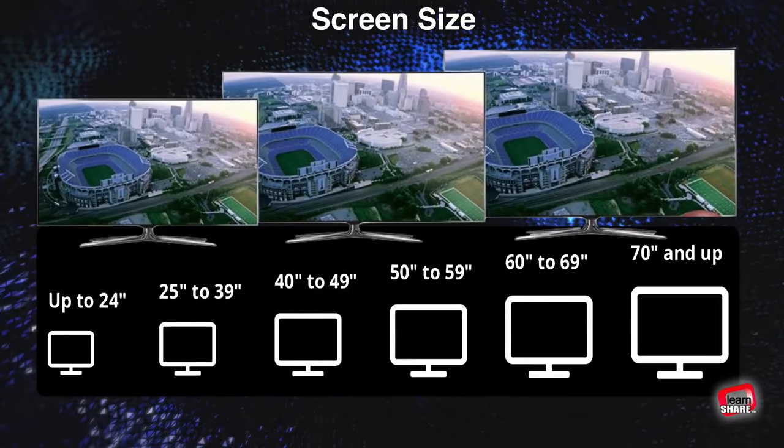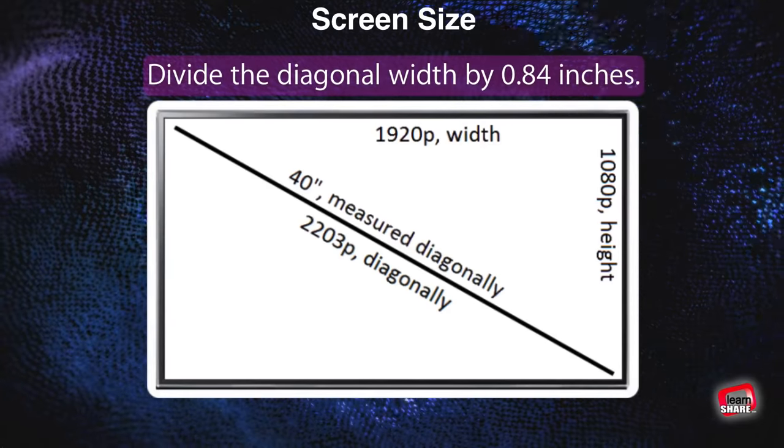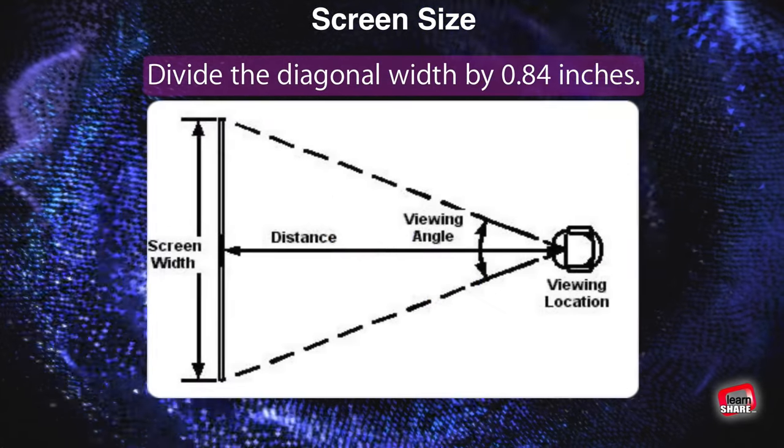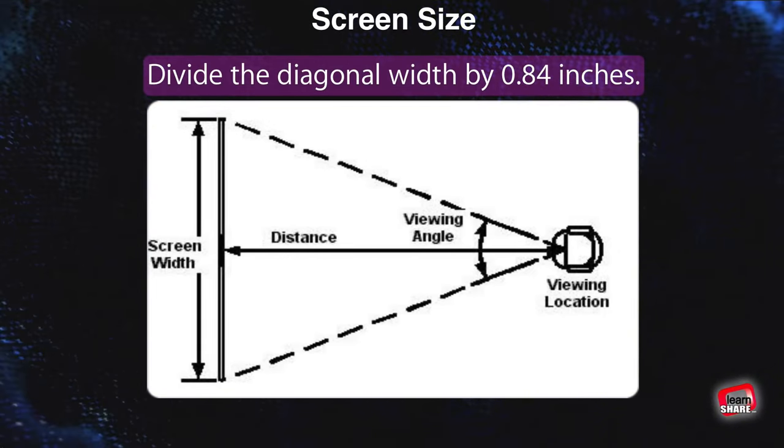So how do you figure out the right size for you? According to THX, you should divide the diagonal width by 0.84 inches. This will give the result of the ideal distance between you and the screen.